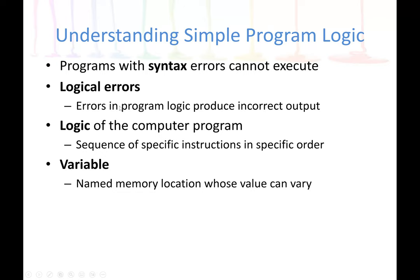For example, instead of adding two numbers, we divided them. The program will compile and execute, but it will give us a wrong result. Errors in the program logic produce incorrect output. This incorrect output can be due to the input entered or due to an incorrect formula used to solve the problem. Computers cannot make a mistake — garbage in, garbage out — which means if you feed in the wrong data, you may get the wrong result.